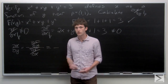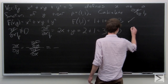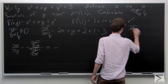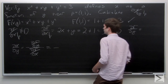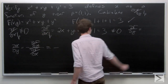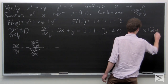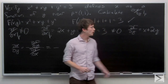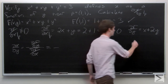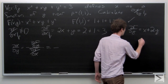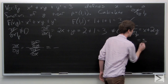So we need to calculate the partial derivative of f with respect to y. That gives us x plus 2y, and evaluated at our point p that is equal to 3.